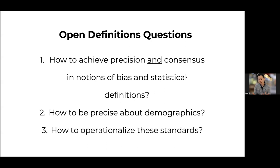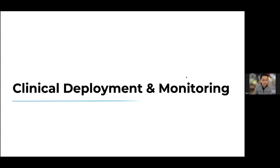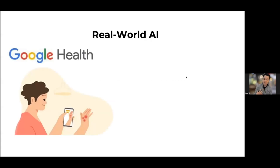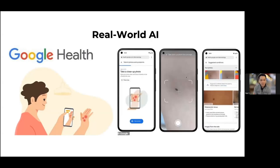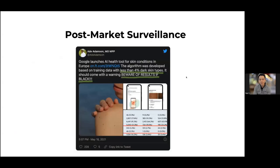The final part of the talk is clinical deployment and monitoring. There's been excitement around companies like Google releasing apps that use AI to diagnose skin cancer from your smartphone — available in Europe, though not yet in the U.S. But people have pointed out these apps were developed on biased data: less than 4% dark skin types, meaning if you have darker skin the algorithm might not perform as expected.